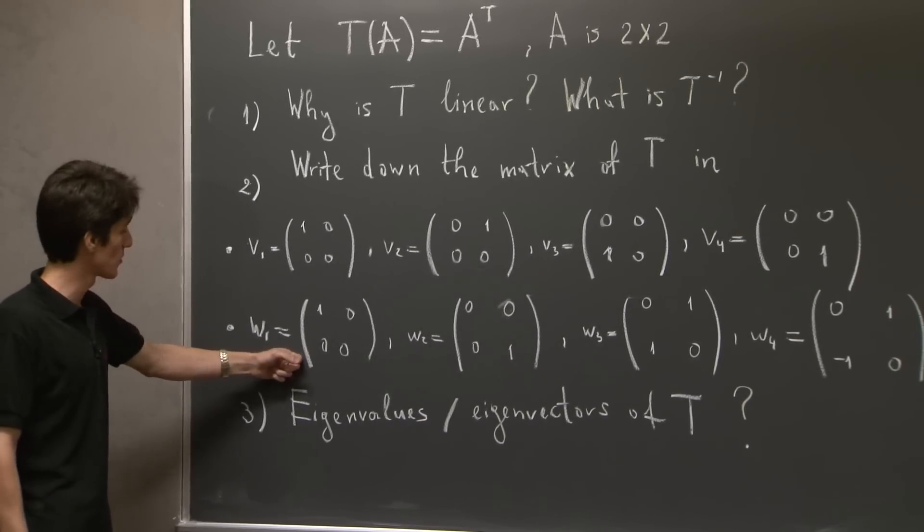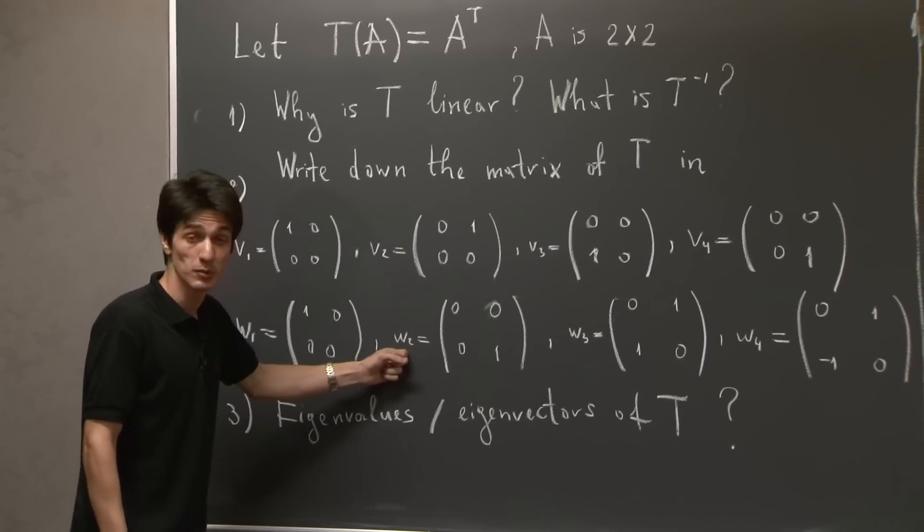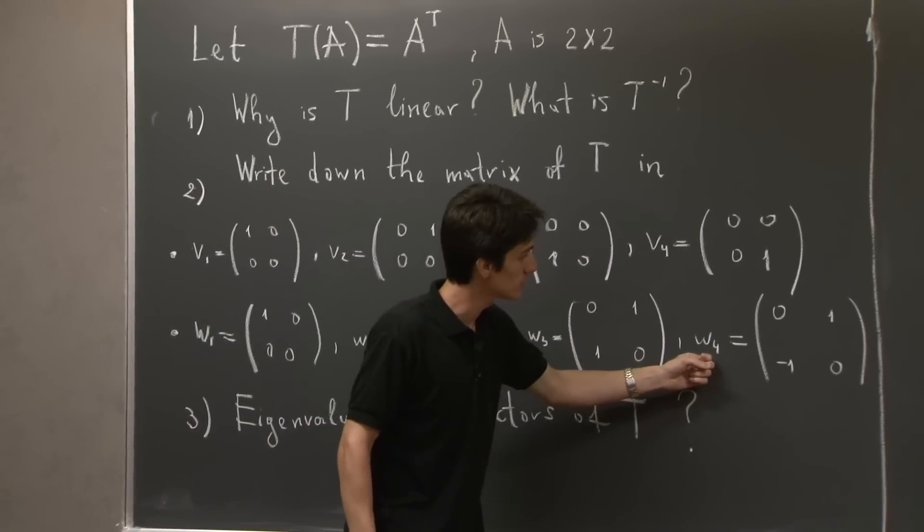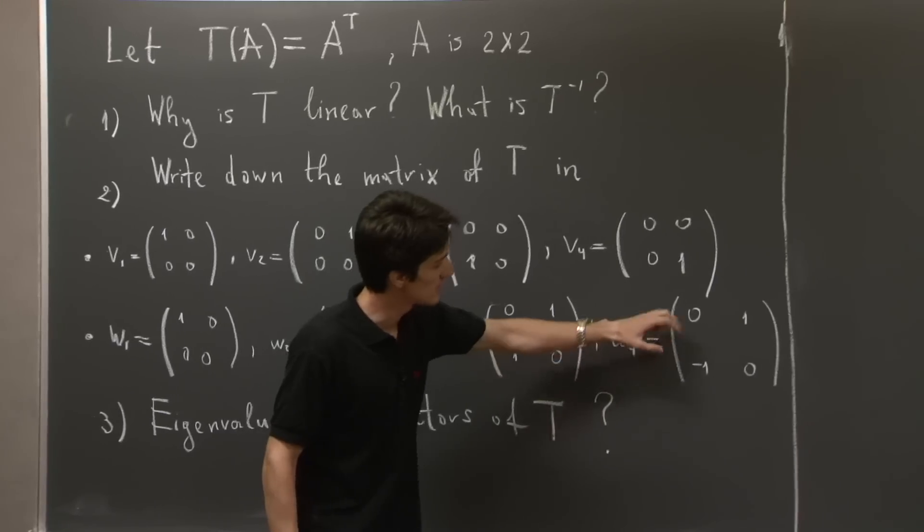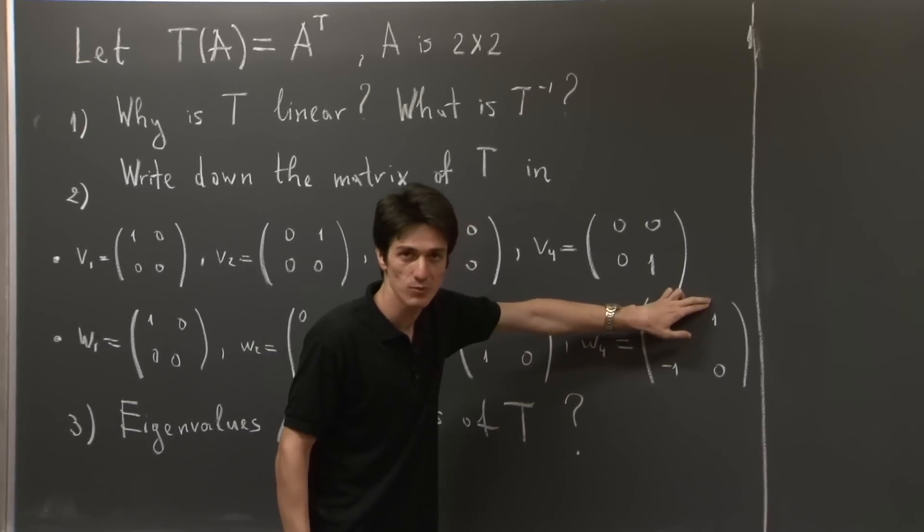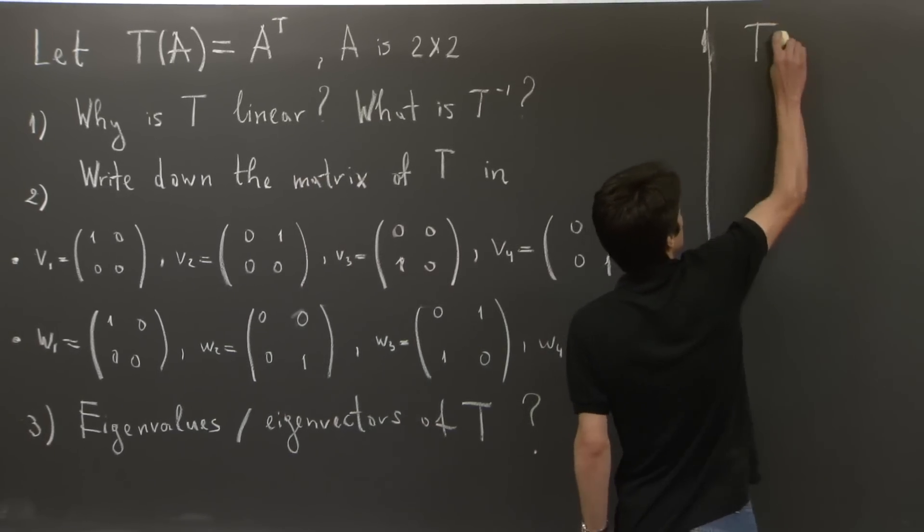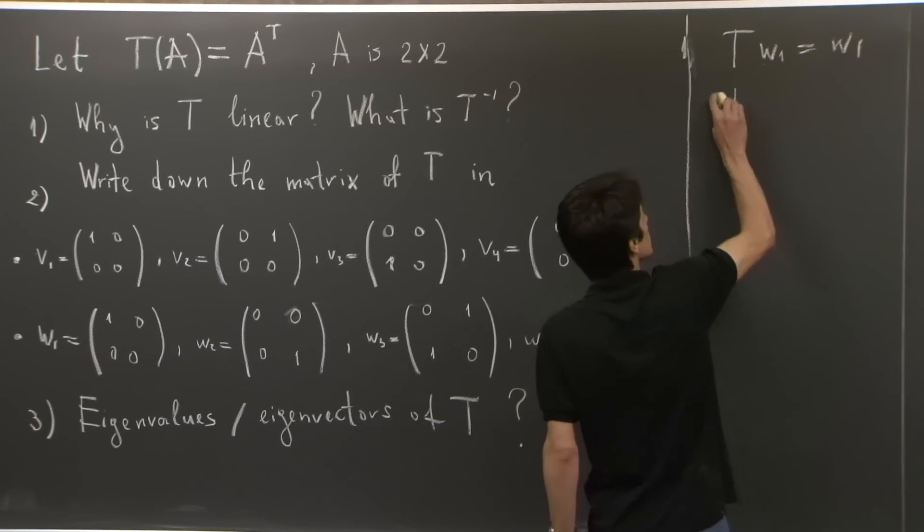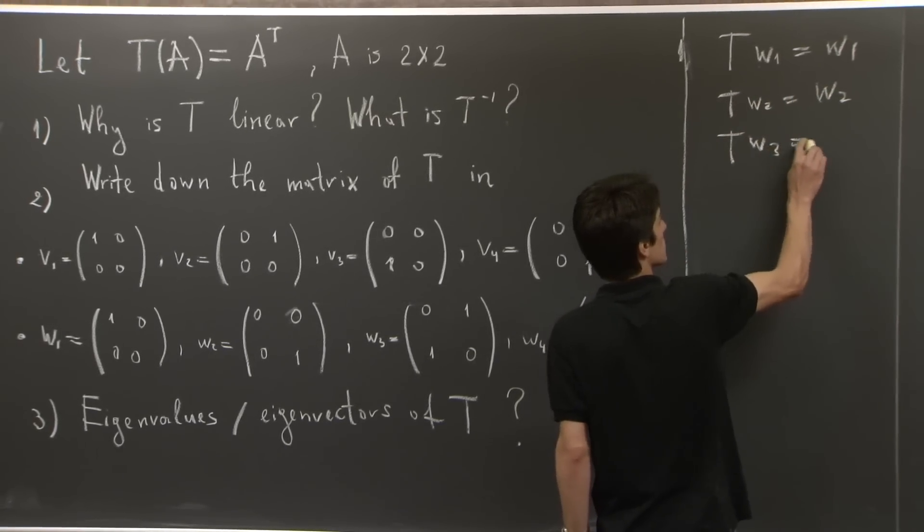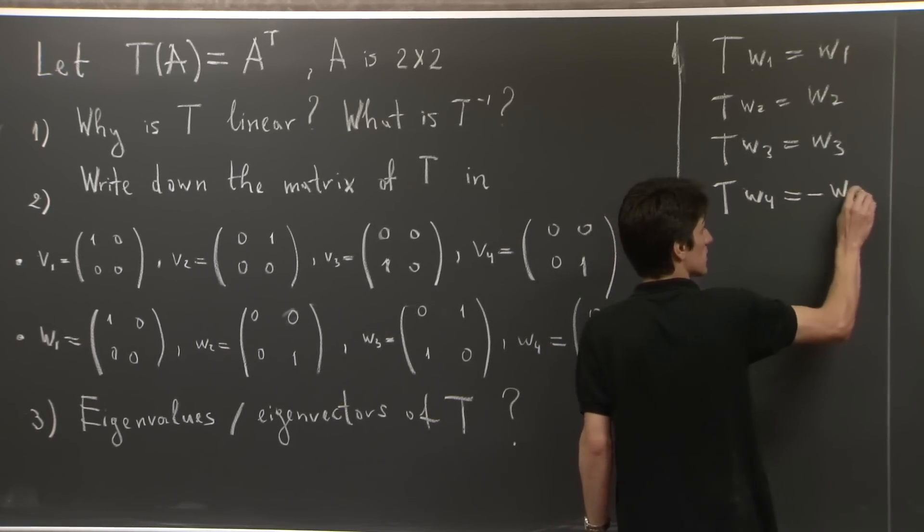So T of W1, well W1 is a symmetric matrix, so T of W1 is W1. Similarly, with W2 and W3, they're all symmetric. What about W4? We see that the one comes down here, the negative one comes up here. And in the end, we just get the negative of W4. So we had T of W1 equal to W1, T of W2 equal to W2, T of W3 equal to W3, and T of W4 was negative of W4.